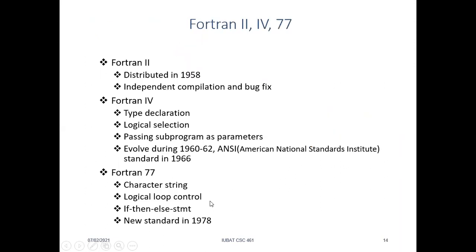Because of these features, FORTRAN I was accepted by most people — especially the scientific community — as soon as it was introduced. After its popularity, they released other versions. FORTRAN II came in 1958, fixing problems and compilation issues from FORTRAN I. FORTRAN III had no major changes, but FORTRAN IV added type declarations, logical selection statements, and the ability to pass sub-programs as parameters.